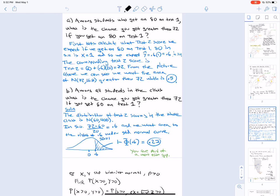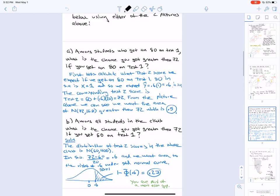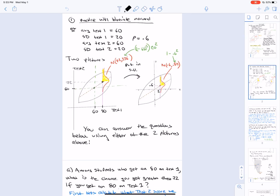The second part of the question was among all students in the class, what's the chance that you get greater than 72 if you get an 80 on test 1? So here, we're not looking at that subgroup of people who got an 80 on test 1. We're looking instead at the total class population and seeing what's the percentage of people that get greater than 72. Well, the mean is 60.